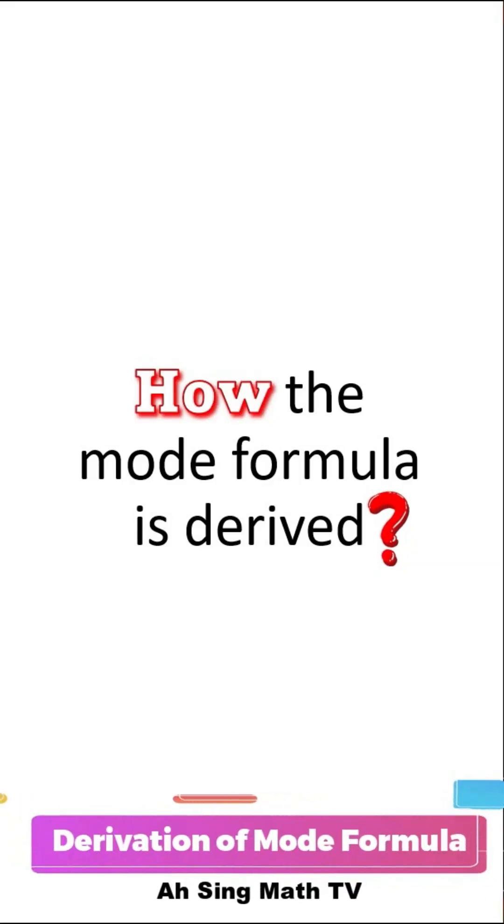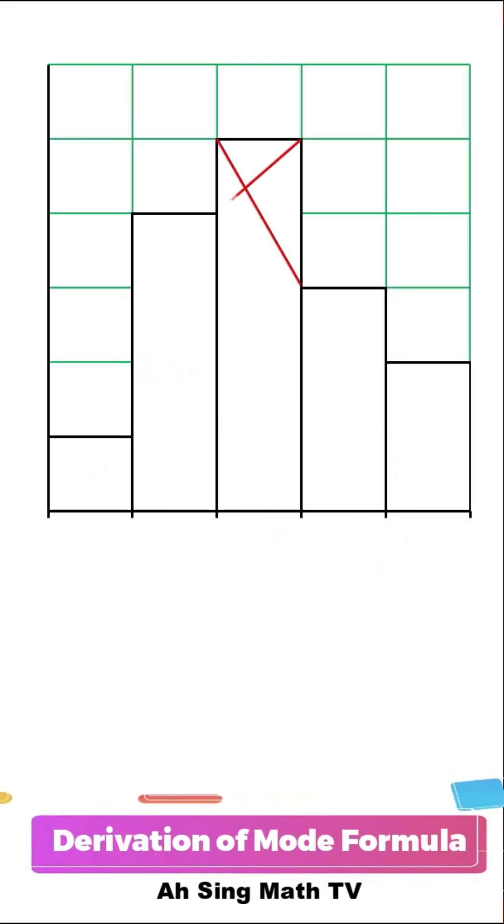How is the mode formula derived? We know that mode can be estimated from a histogram. Notice that there are two similar triangles. According to the properties of similar triangles, the ratios of the corresponding sides are exactly equal.